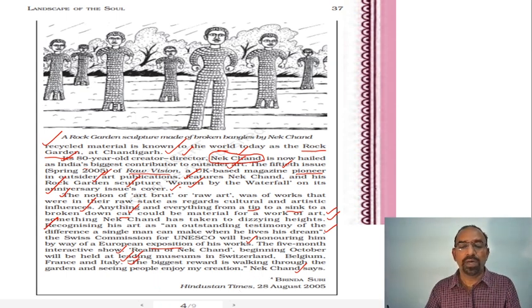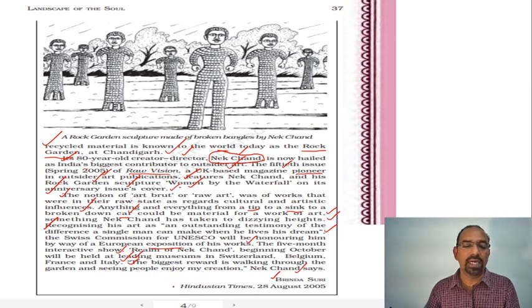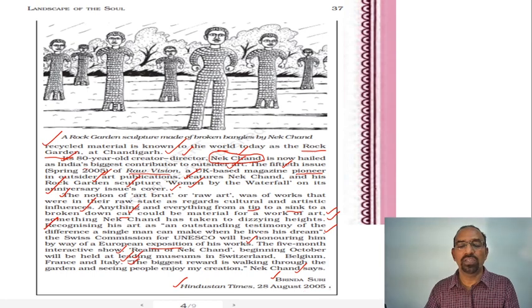Nek Chand used to say that the biggest reward was walking through the garden and seeing people enjoy his creation — that was his greatest reward as an artist and sculptor. This part of the lesson is written by Brinda Suri, an article published in the Hindustan Times, 28th August 2005, covering art brut and Nek Chand as one of the pioneers of outsider art from India.